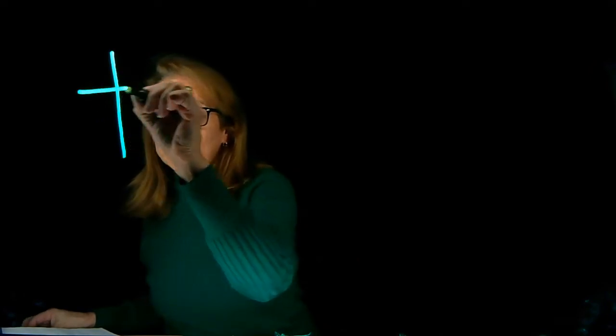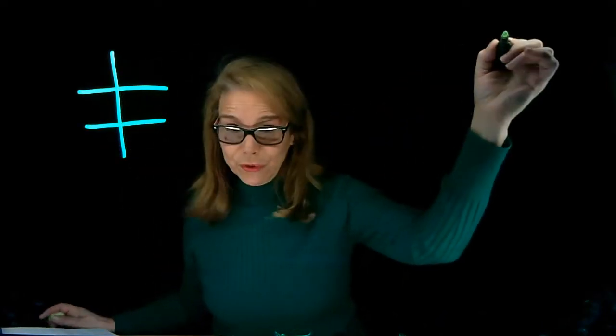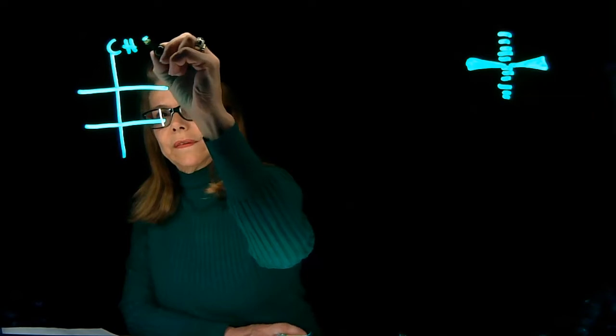We're going to do one problem about finding absolute configurations in a compound that is in Fischer projection. This is one carbohydrate. Remember that in Fischer projection, dashes are in the vertical and wedges are horizontal. That's our convention. I'm going to copy the structure.